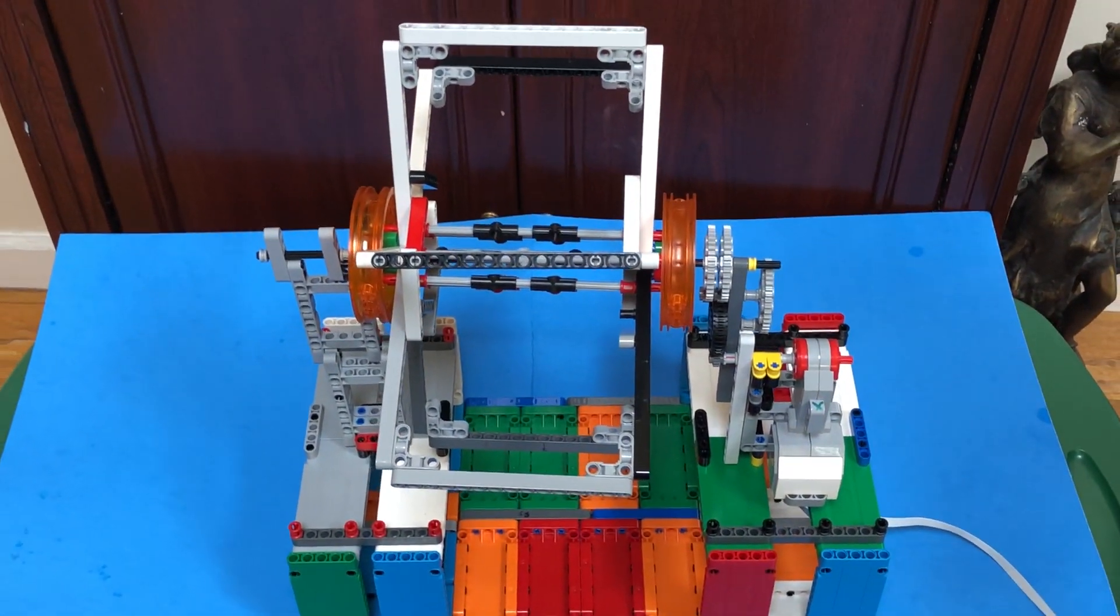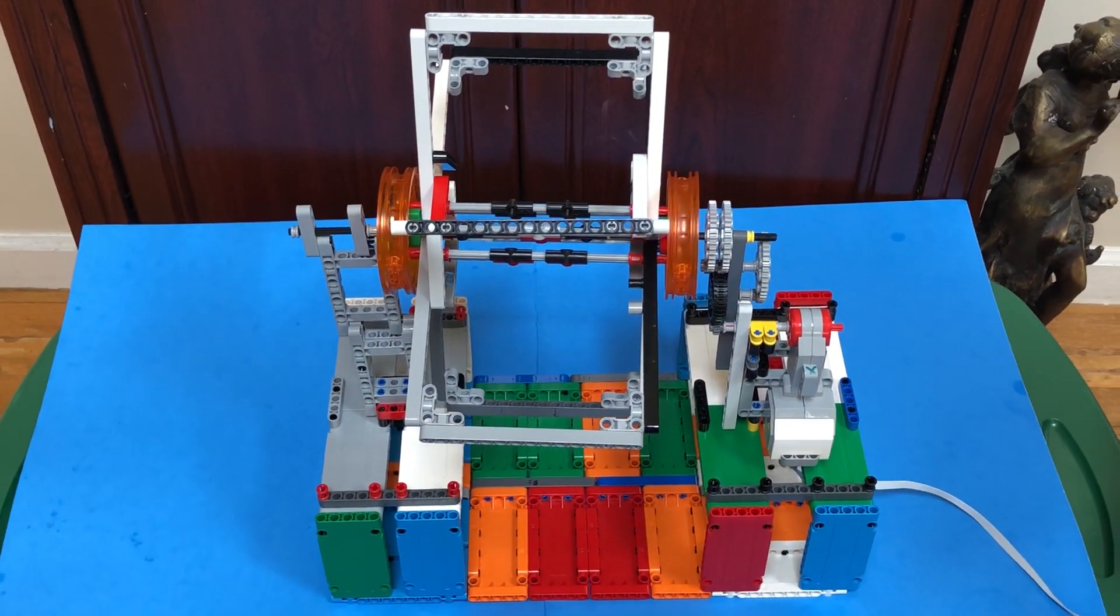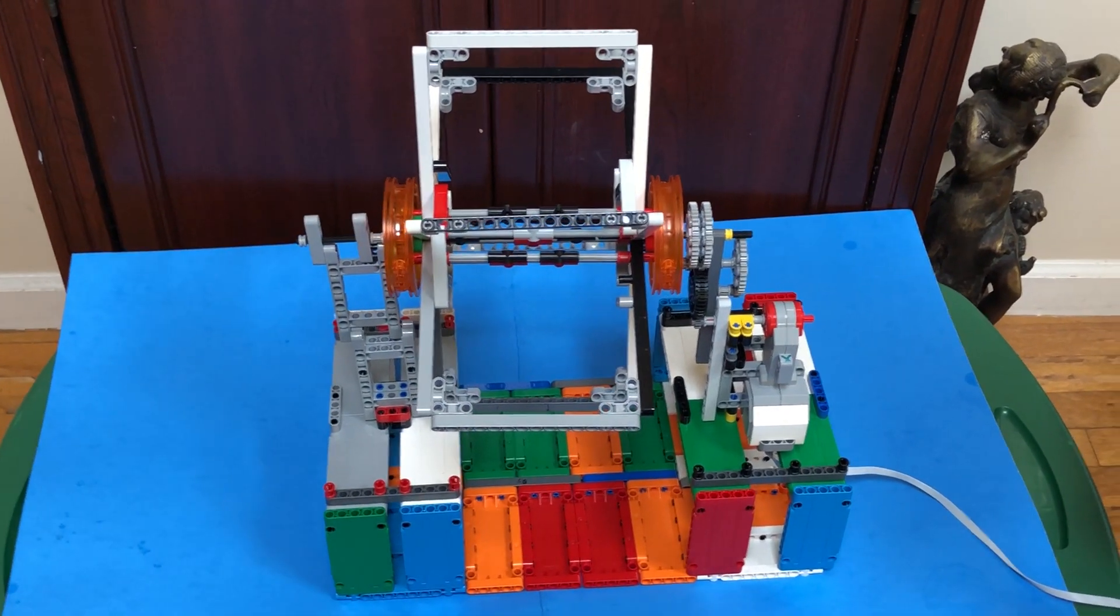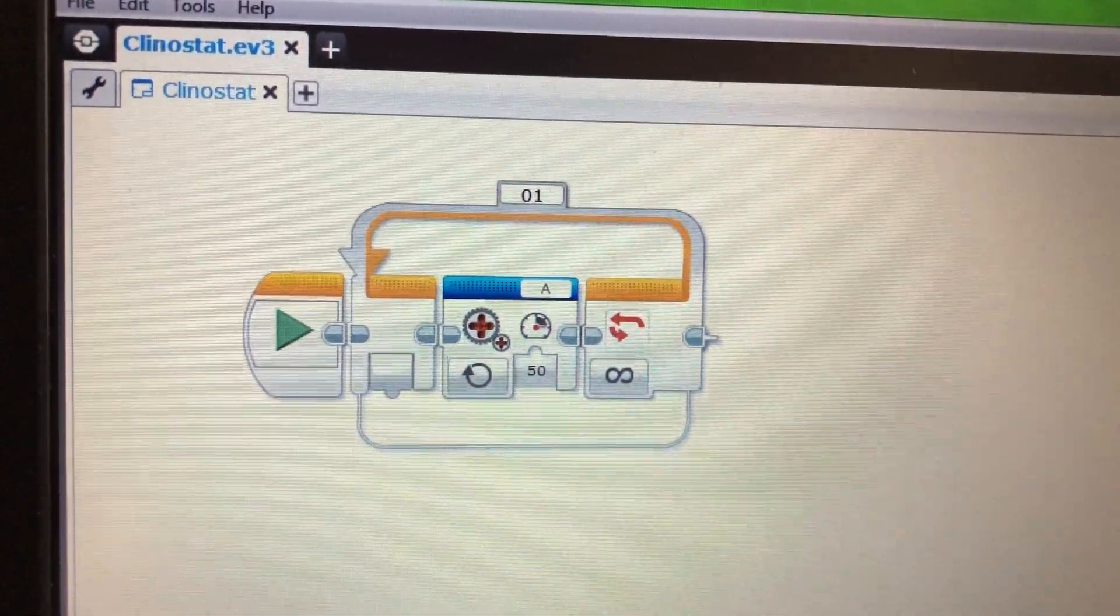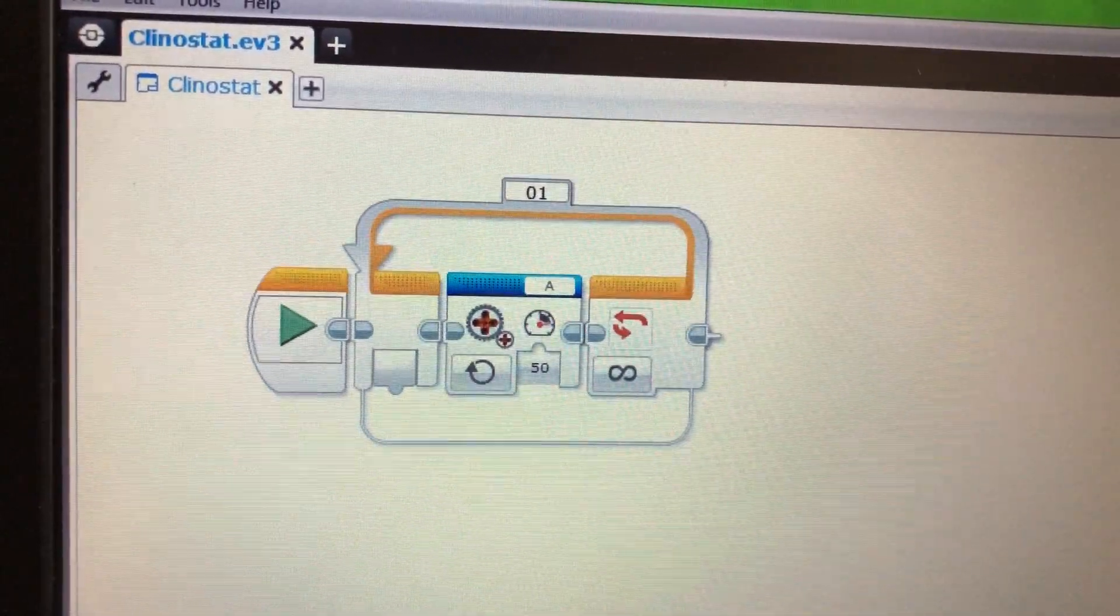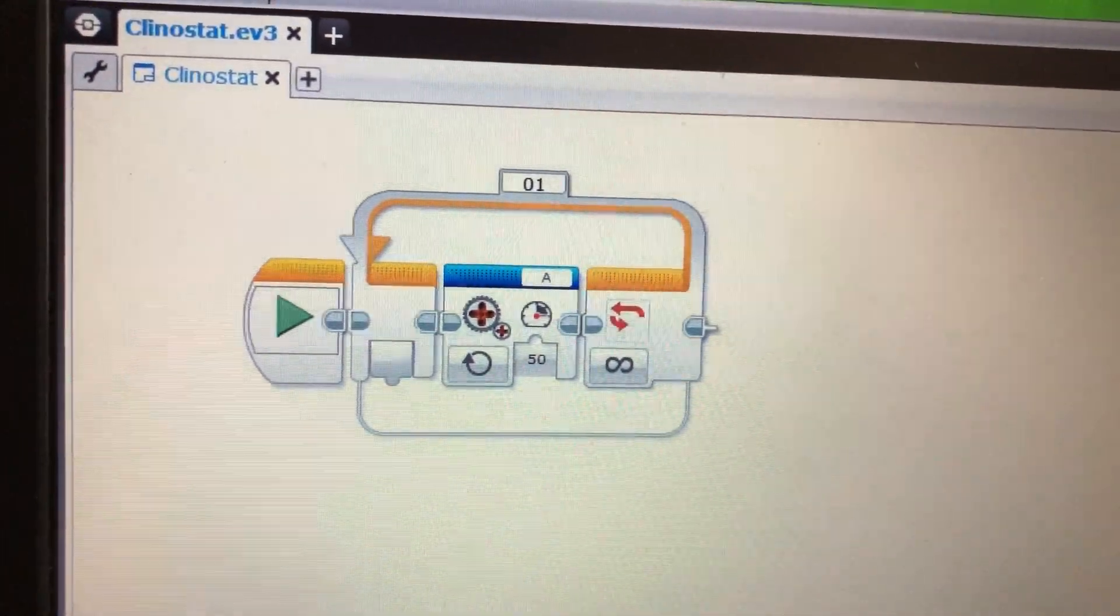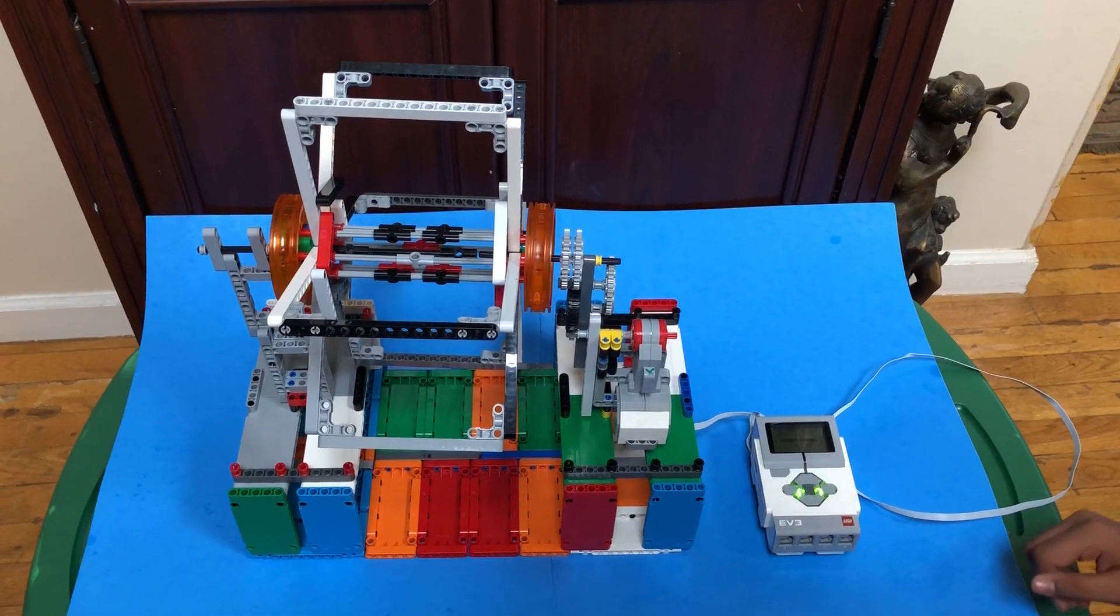Typical clinostats run at about 0.3 to 3 rotations per minute. Now we will demonstrate this clinostat in action. This is the program that we will be running on the clinostat. You can change the power to suit your needs. Let's run the program.